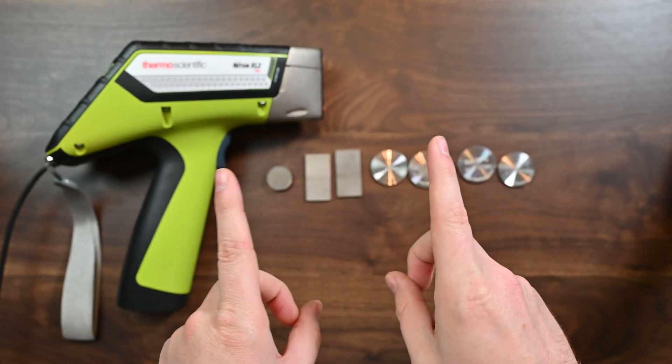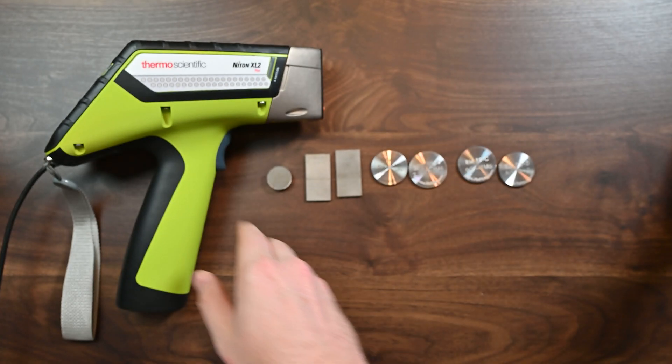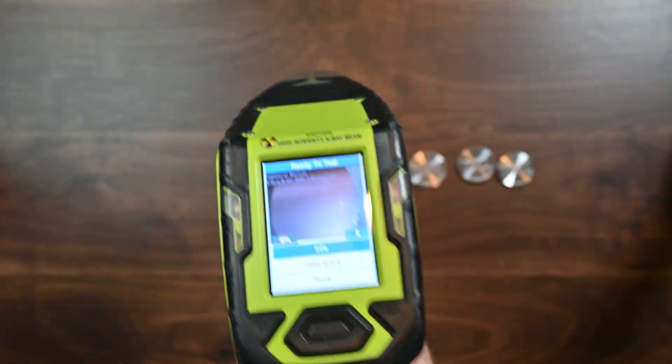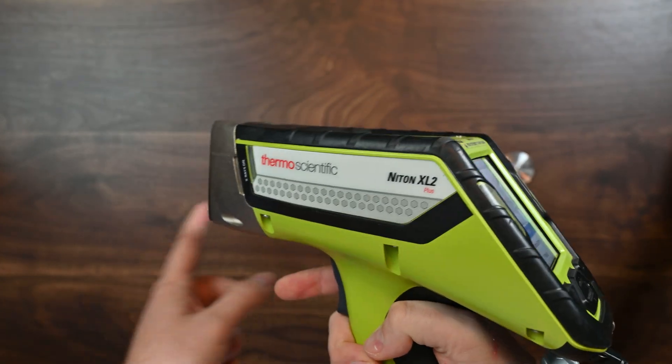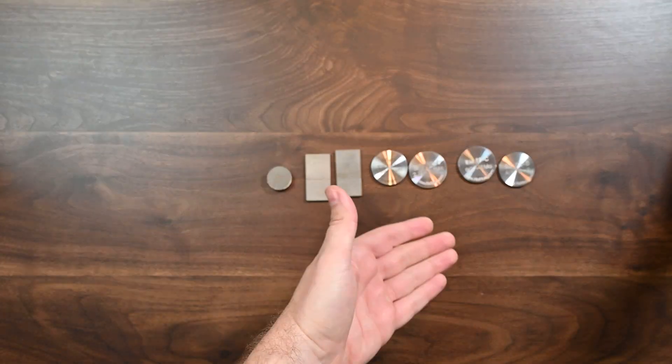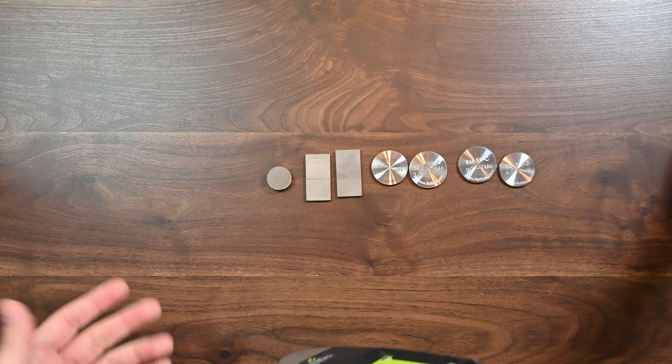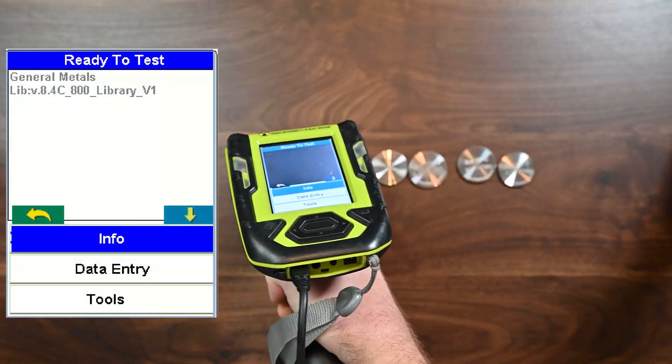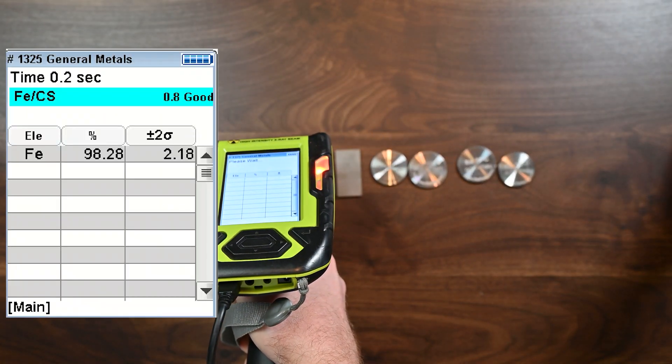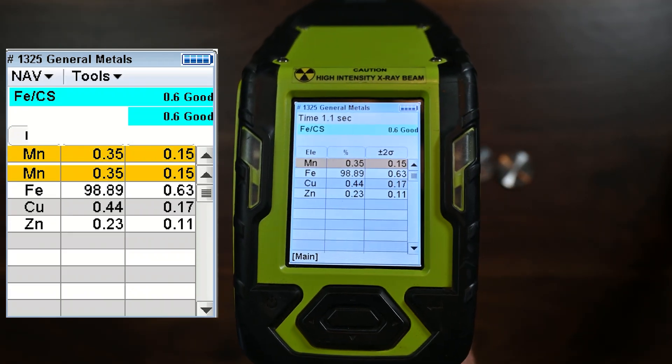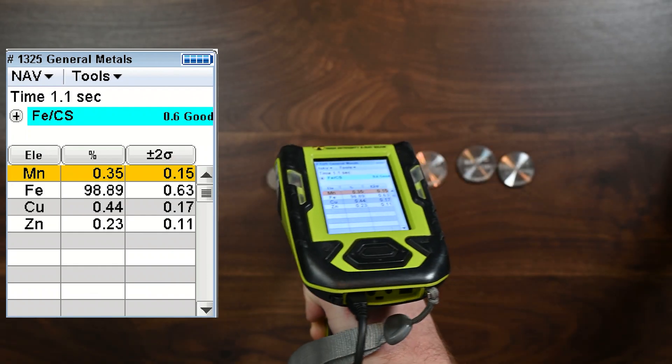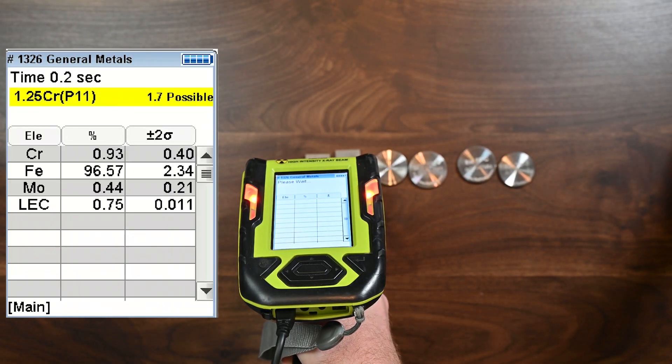We're going to start by doing a quick test of each one of these. I want to see how fast this analyzer, the Niton XL2 Plus, can test all of these materials down below and can it get the right answer. So the first thing we're going to do is test this steel sample. You're able to see that within one second, we're able to test that one.